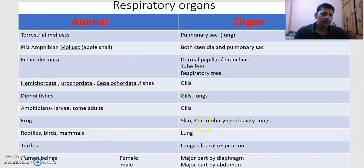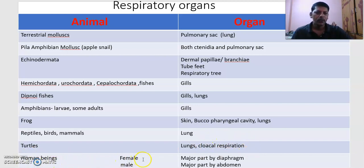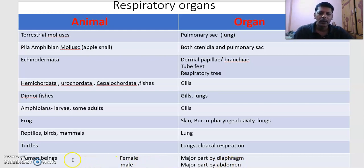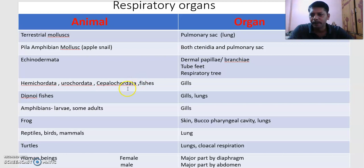In reptiles, birds, and mammals, the respiratory organs are lungs. Turtles also have lungs and undergo cloacal respiration. In human beings, females primarily use thoracic (diaphragmatic) breathing, while males primarily use abdominal breathing. These are the different respiratory organs across animals in the kingdom Animalia. In the next class, we will start the human respiratory system.